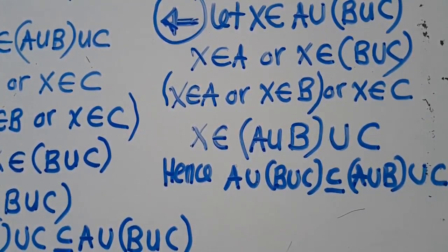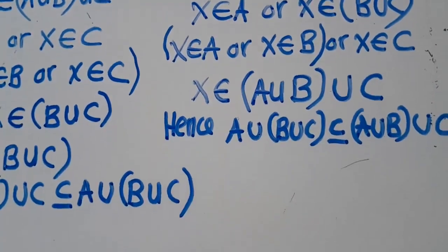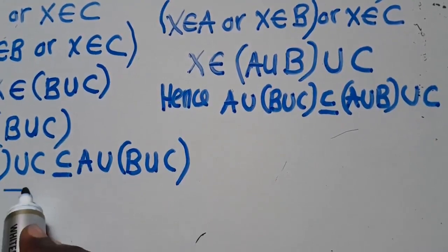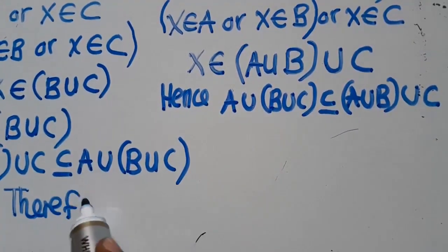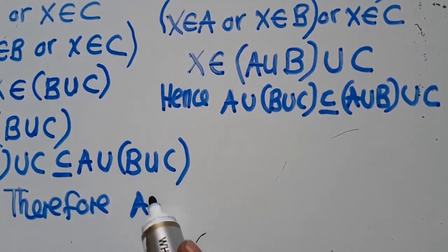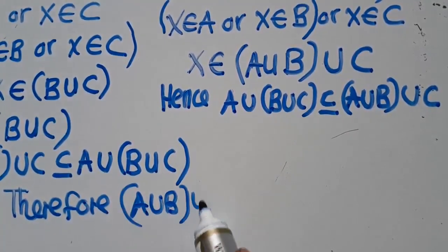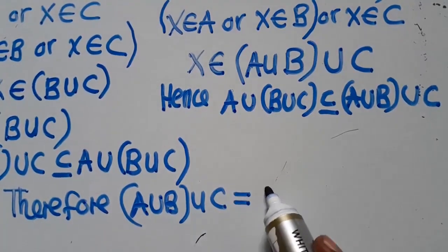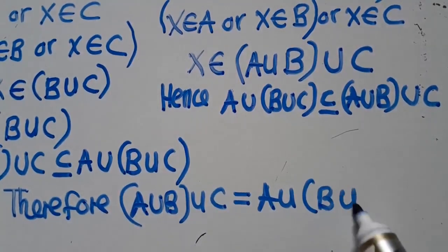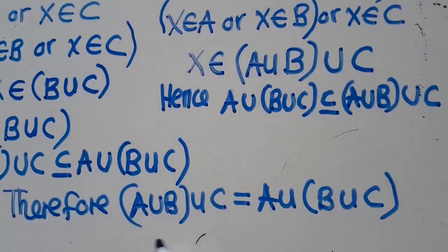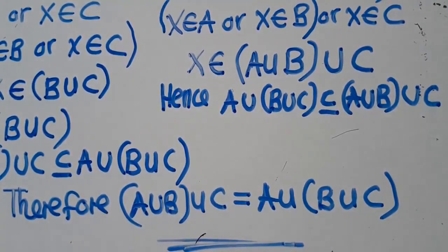After proving both sides, you say: therefore, (A∪B)∪C = A∪(B∪C). You are done. This is how you prove it. You need to make sure you use all these procedures and understand them clearly. These are important steps you need to know.